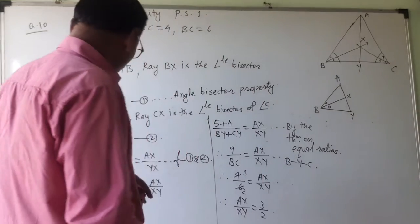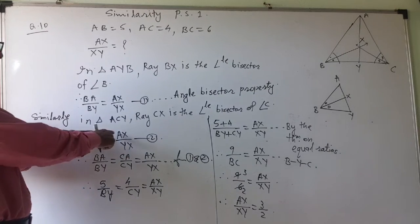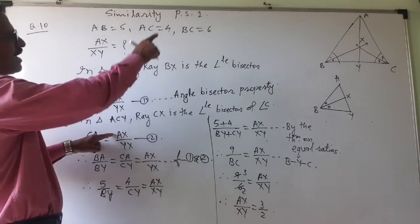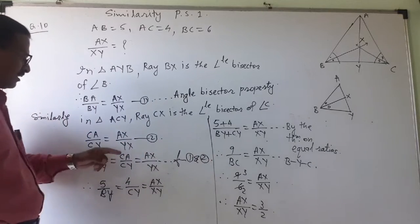This way I have to write, don't forget the sequence. CA upon CY is equal to CA, then start from A, AX. CY, they start from Y, YX. This is number 2.